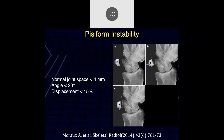You can get pisiform instability. There's an article discussing measurements that separate normal from abnormal pisiforms. The joint space should be less than four millimeters. If the angulation is greater than 20 degrees, it may be pathologic. The flexor tendon comes over the pisiform and attaches proximally — abnormal angulation can indicate a flexor tendon tear. You can also get proximal displacement from flexor tendon pull, and the displacement should not be more than 15% of the diameter of the pisiform bone.